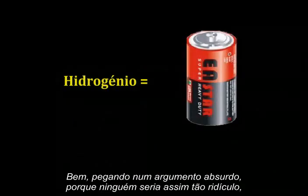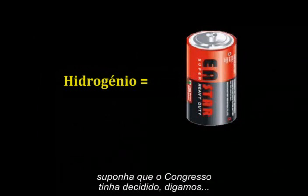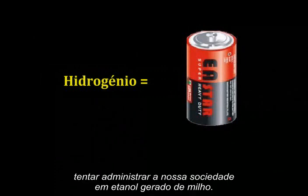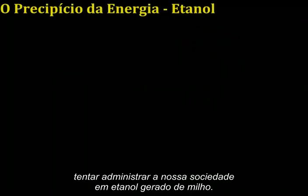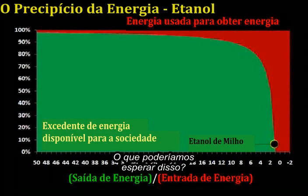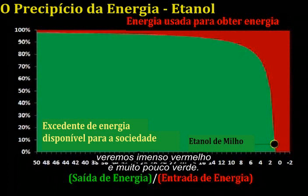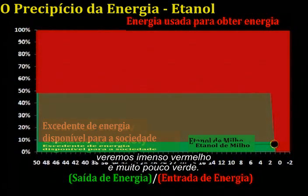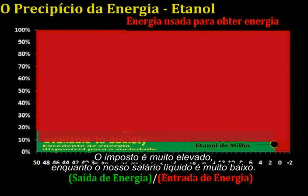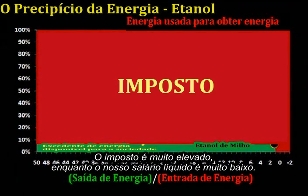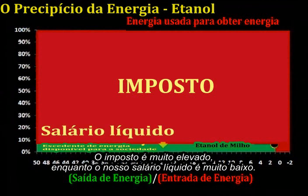To make an absurd argument, because nobody would be this foolish, suppose Congress made the decision to try and run our society on corn-based ethanol. If we adjust our graph to reflect that decision, we'll see a whole lot of red and very little green. The tax is very high, while our take-home pay is very low.